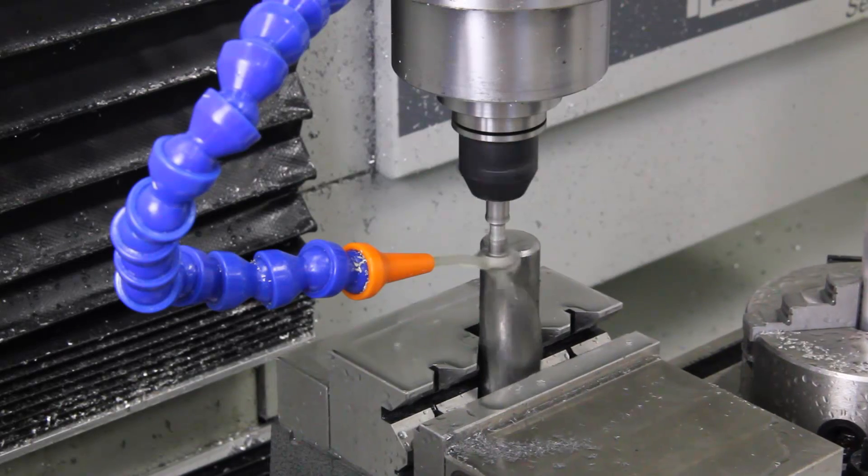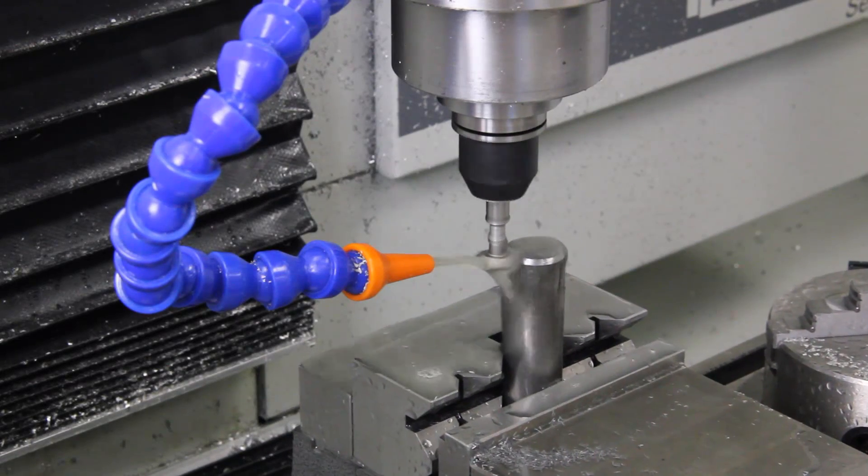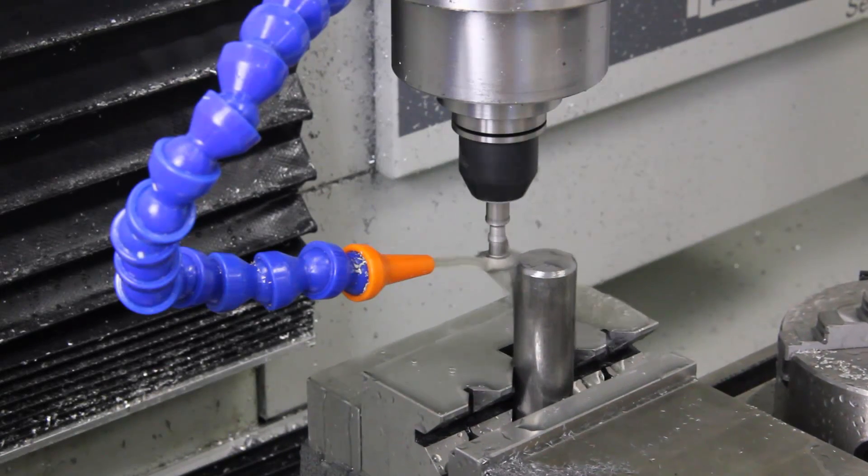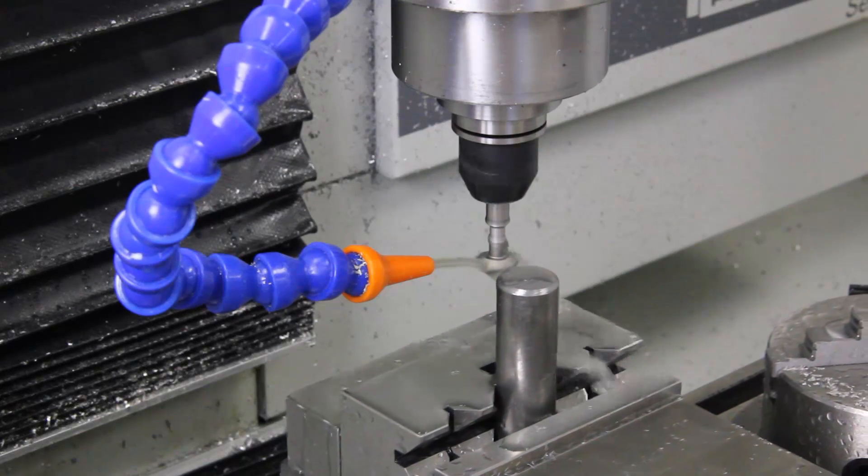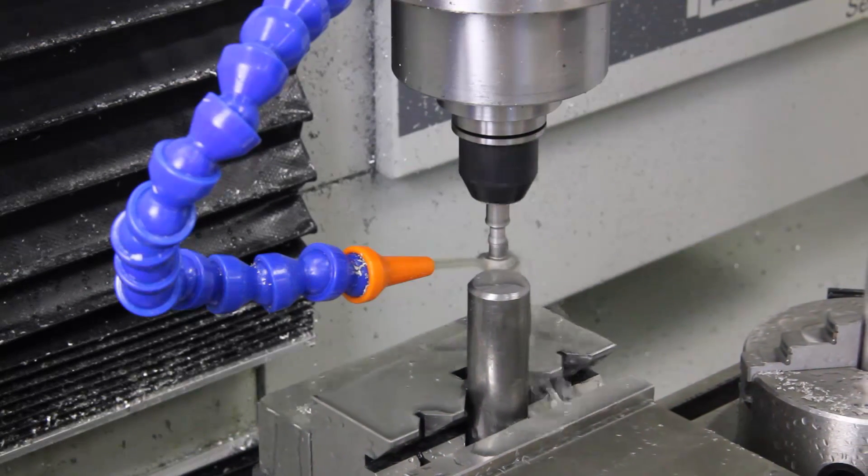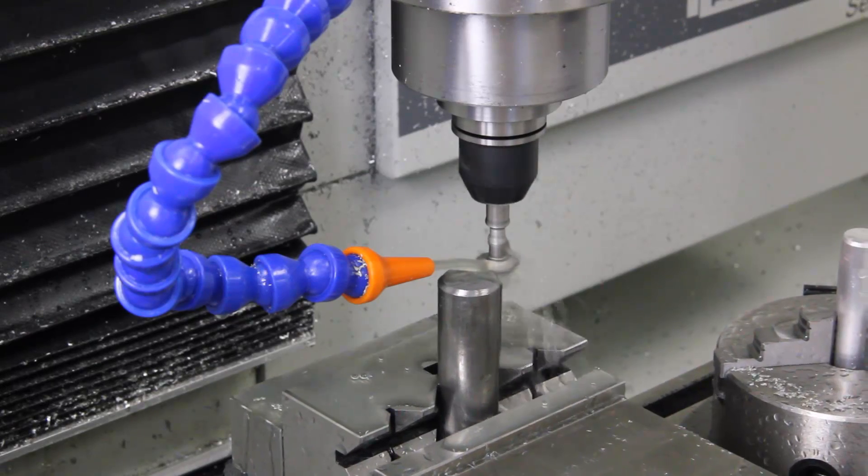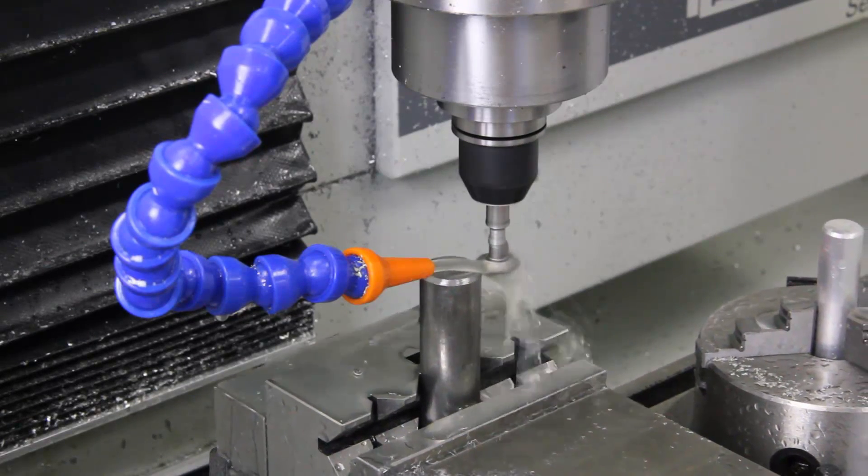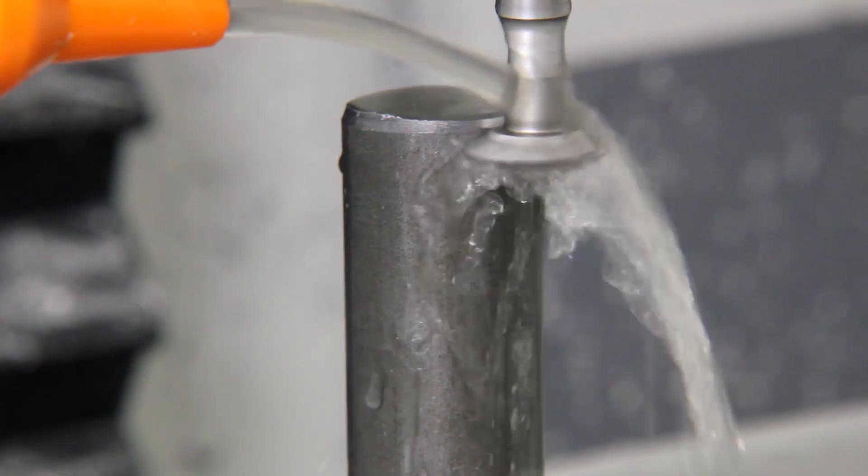We can calculate feeds and speeds for thread mills in the same manner as for other rotating cuts. Here we base these on the recommended surface speeds for the pairing of 1018 steel workpiece and high-speed steel cutting tooth. A machinist's calculator like G-Wizard can easily help you do this.